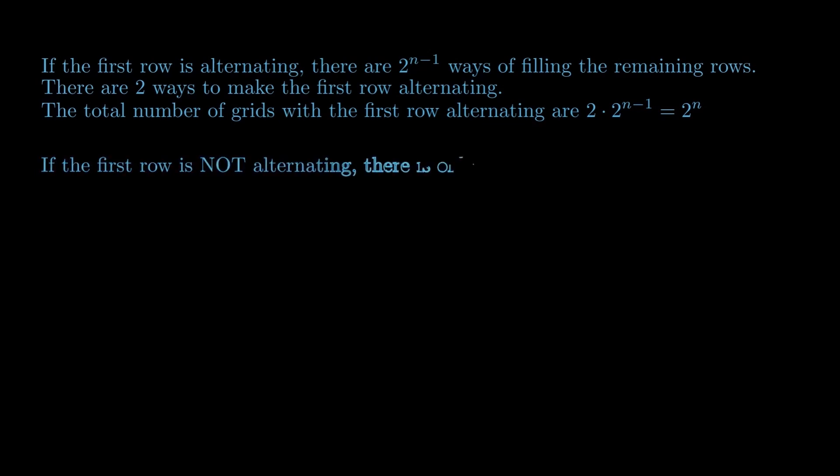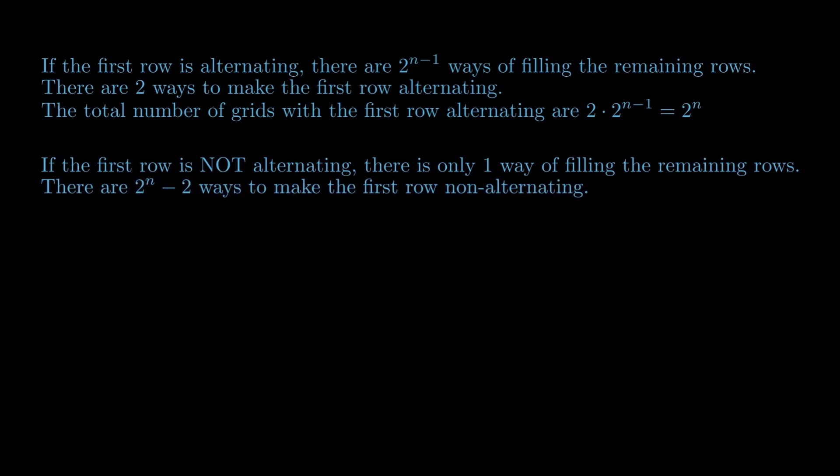On the other hand, if the first row is not alternating, there is only one way of filling the remaining rows. There are 2 raised to the power n minus 2 ways to make the first row non-alternating. Hence, the total number of grids with the first row non-alternating are 2 raised to the power n minus 2.